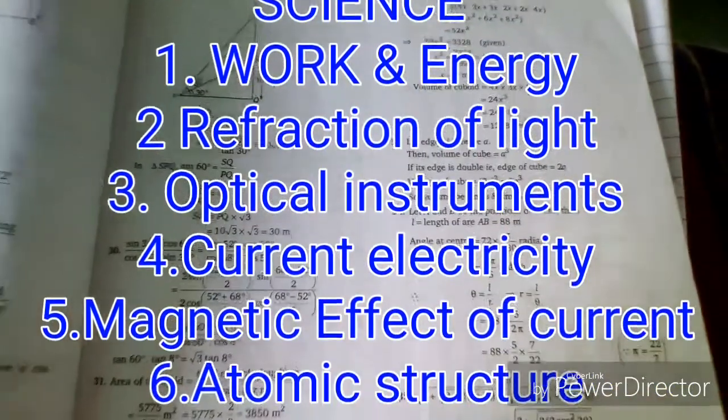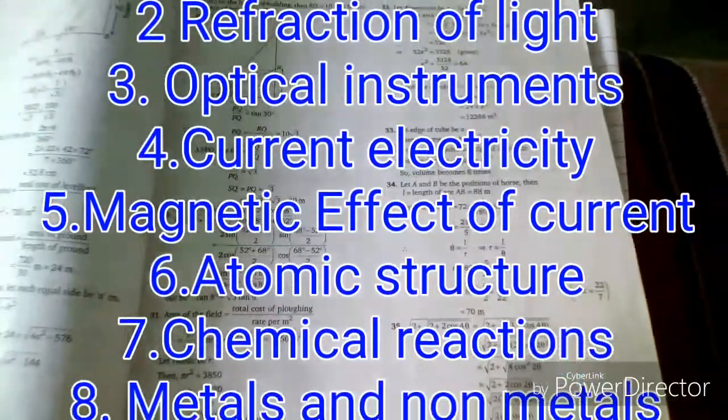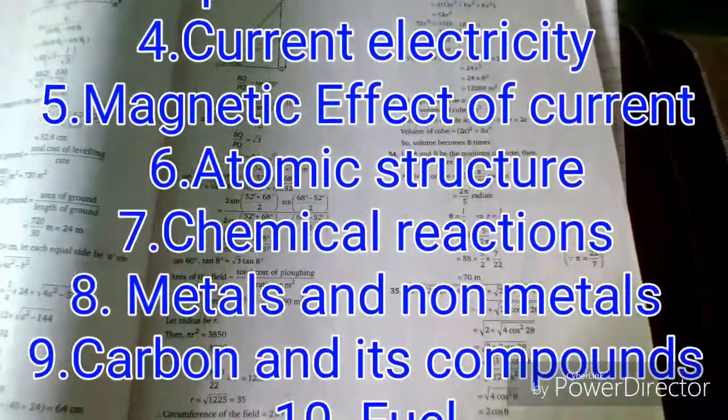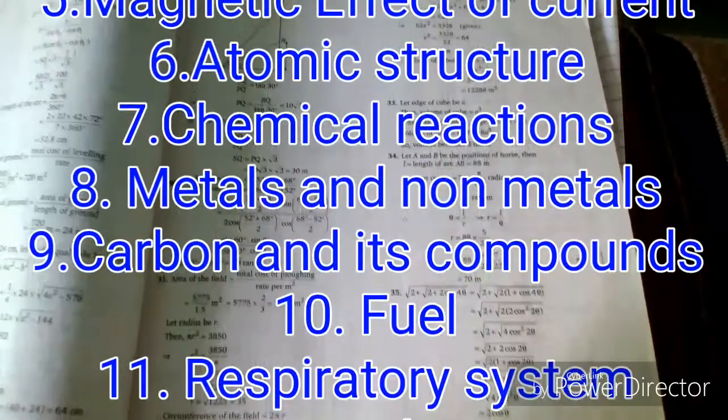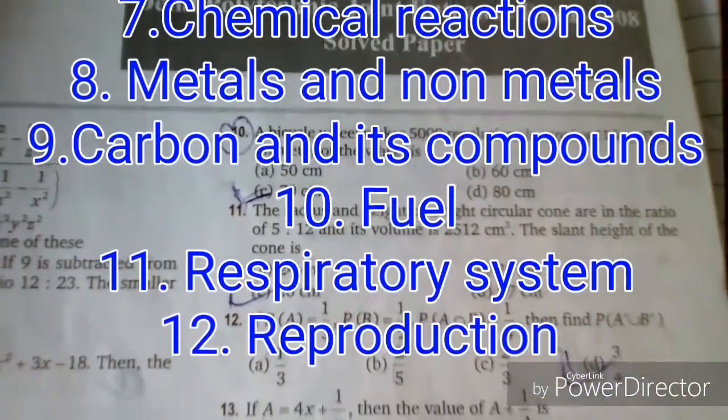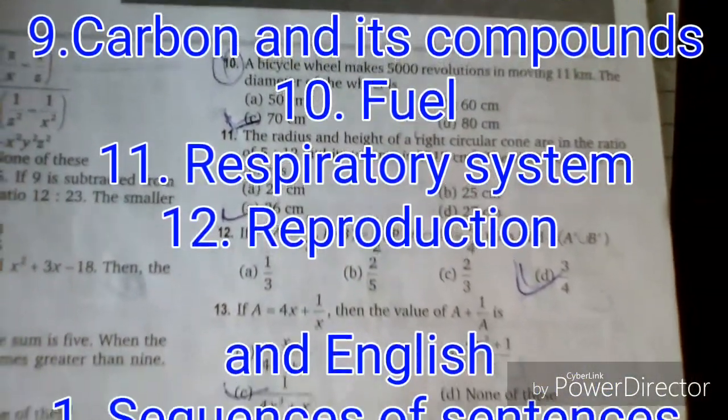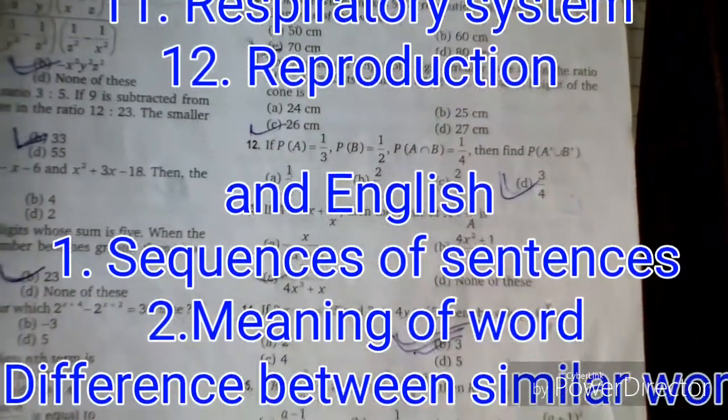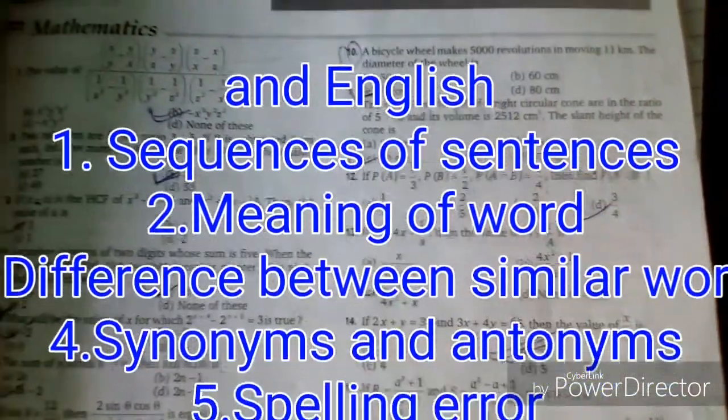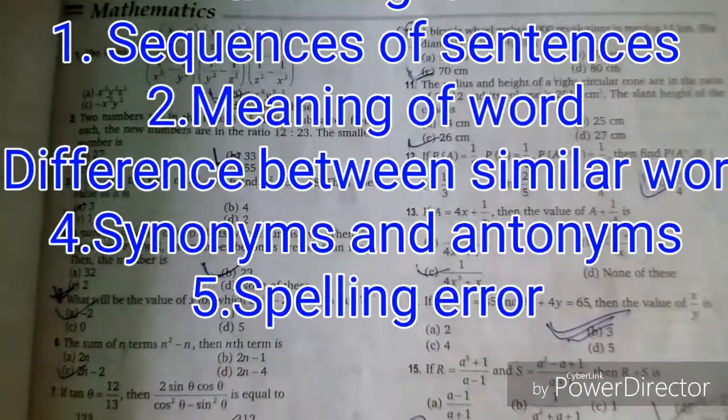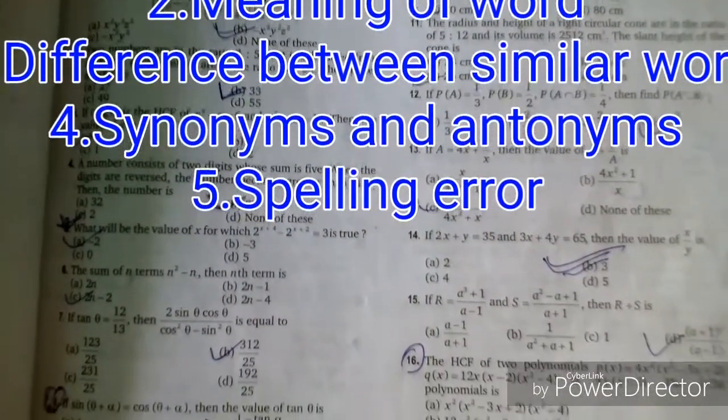The chapters for science are: work and energy, reflection of light, optical instruments, current electricity, magnetic effect of electric current, atomic structure, chemical reactions, metals and non-metals, carbon and its compounds, fuels, respiratory system, and reproduction.